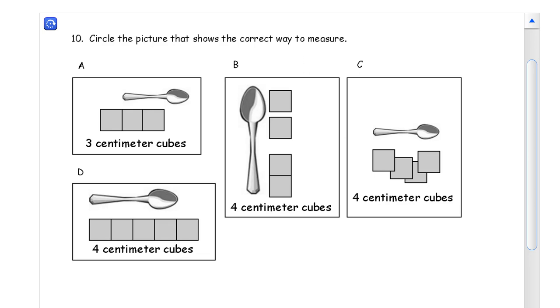And now we're looking at pictures of spoons with centimeter cubes. And it says circle the picture that shows the correct way to measure. So looking at A, we can't call this three centimeter cubes because our spoon is here, but our end points for our centimeter cubes are not lined up with the end points of the spoon. So we can't call that three centimeter cubes there.